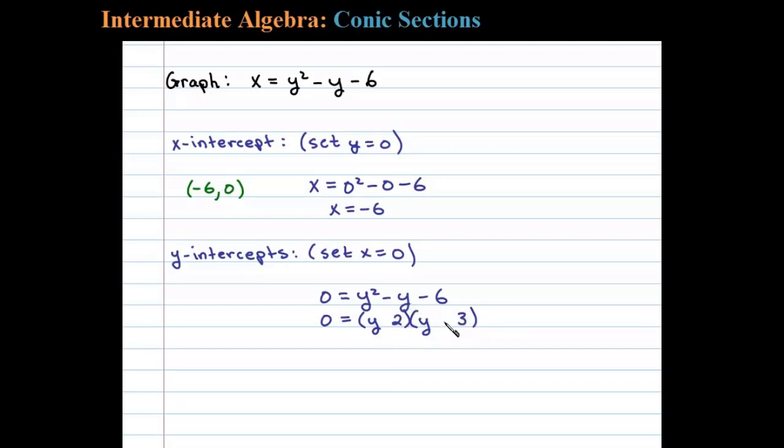We'll have a negative one y if the three is negative here and the two is positive, and then set each factor equal to zero. And that gives us two answers, y equals negative two or y equals three. And so that tells us we have two y-intercepts, one at zero comma negative two and another at zero comma three.